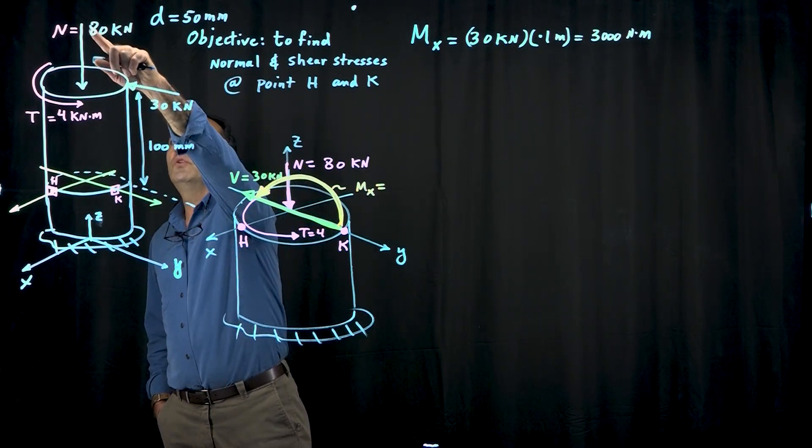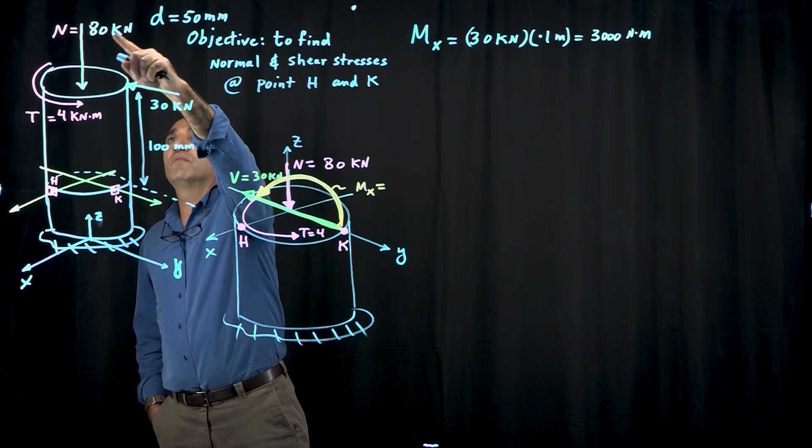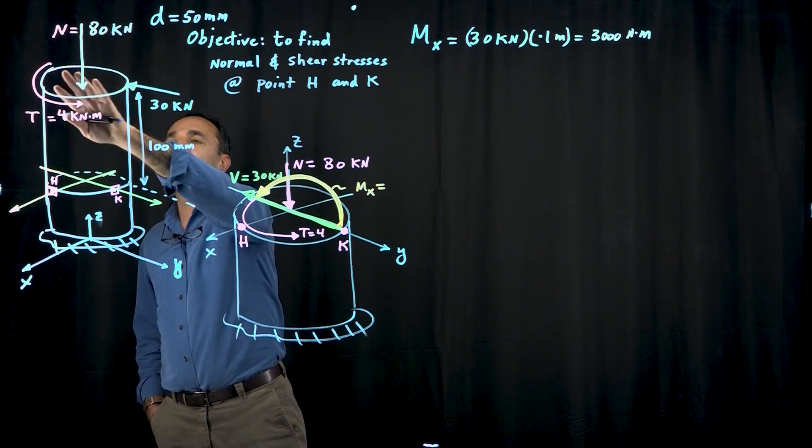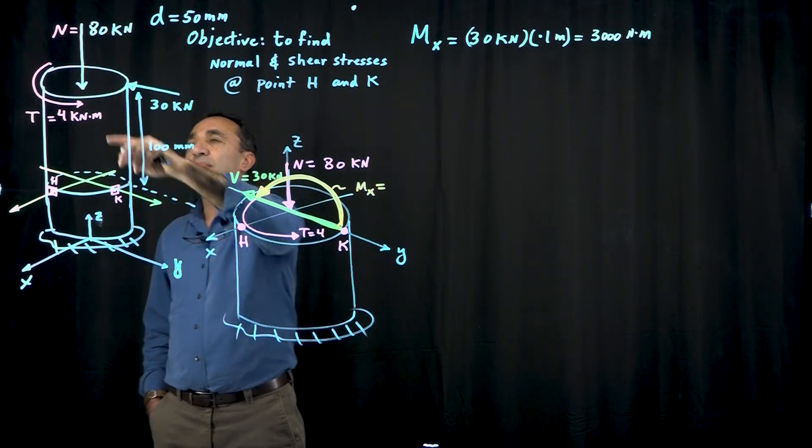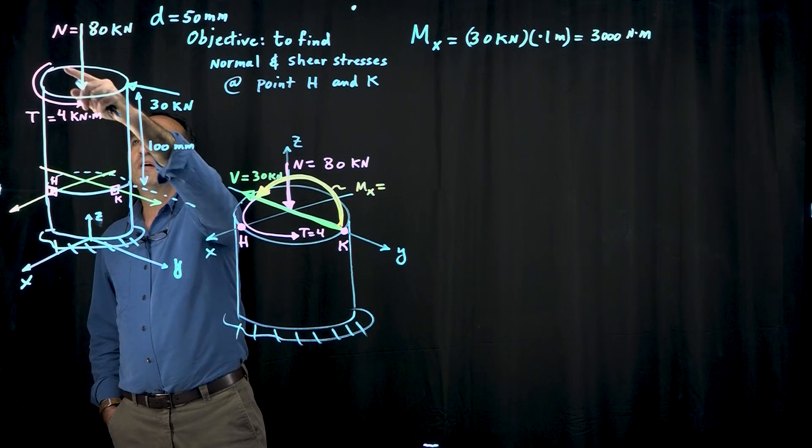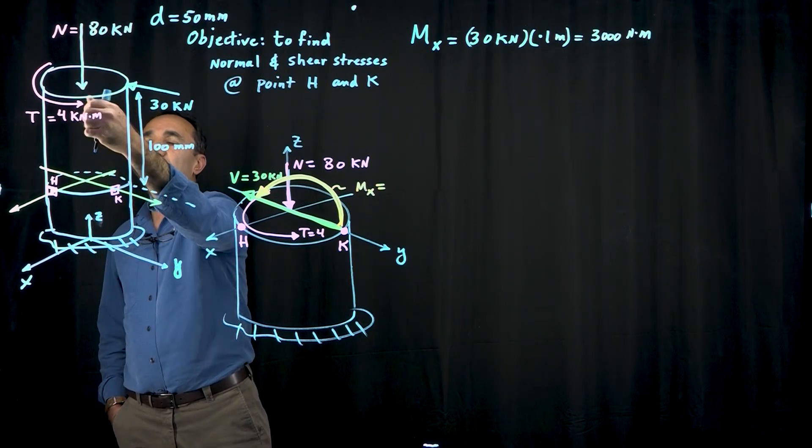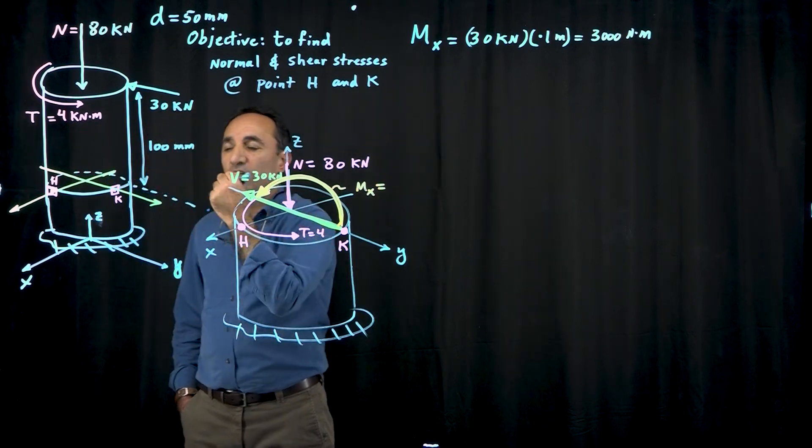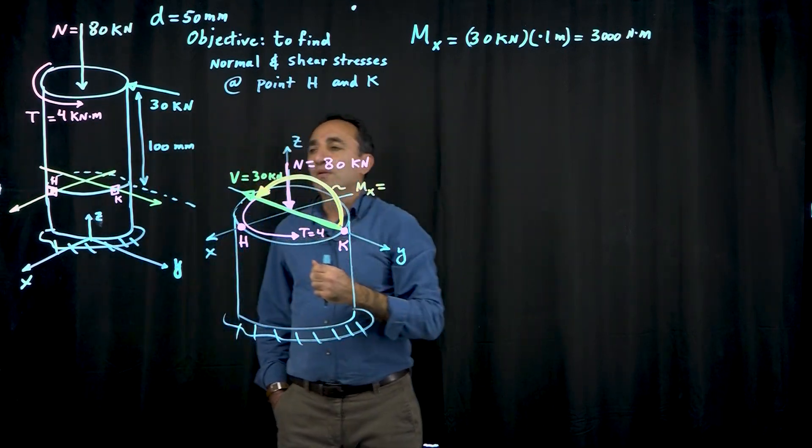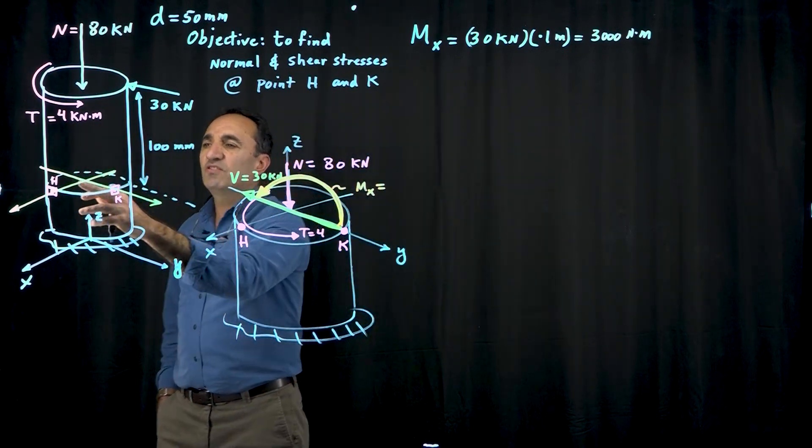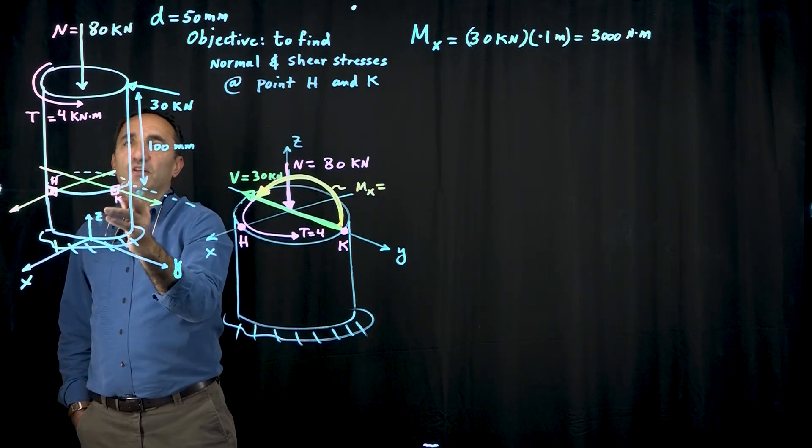an axial load of 80 kilonewtons compressing the shaft, and a torsional load—a twisting moment about the z-axis which we call torque—of 4 kilonewton meters.